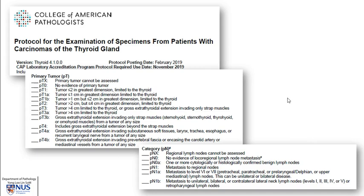When handling a case, the pathologist will often refer to this template, created by the College of American Pathologists, which is widely recognized and used by pathologists all over the world. We also use the AJCC staging system, which goes by different size cutoffs, as well as the presence of extrathyroidal extension and nodal status.